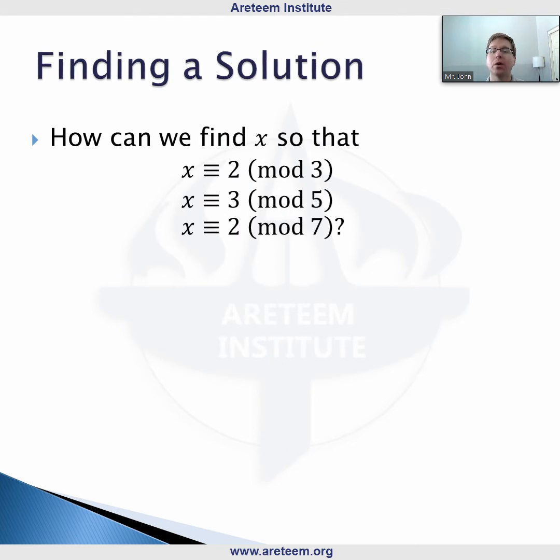I will say more about this later, but the Chinese remainder theorem does not tell us when there are not solutions. This is an existence theorem. It tells us in these scenarios, you're guaranteed to have a solution. If these restrictions aren't met, maybe you have a solution, maybe you don't. Let's go back to our original question.